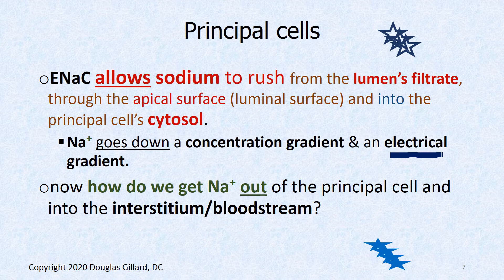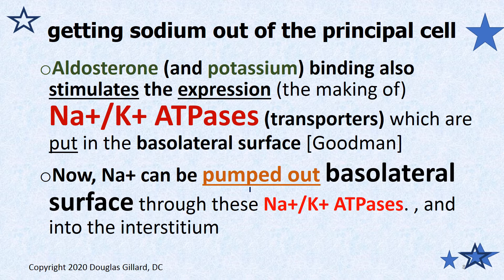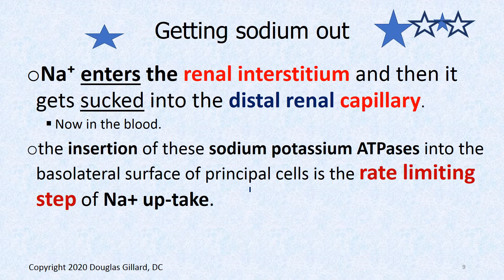How do we get sodium out of the bottom of the cell? The binding also stimulates the expression — so it goes through the central dogma — and we make sodium-potassium ATPase pumps or transporters. Those are on the basolateral surface — the bottom of the cell, the interstitial side. Now the sodium is actively pumped out, and it costs an ATP. This is not a passive process. Sodium ATPase costs energy, so we do have to burn an ATP.